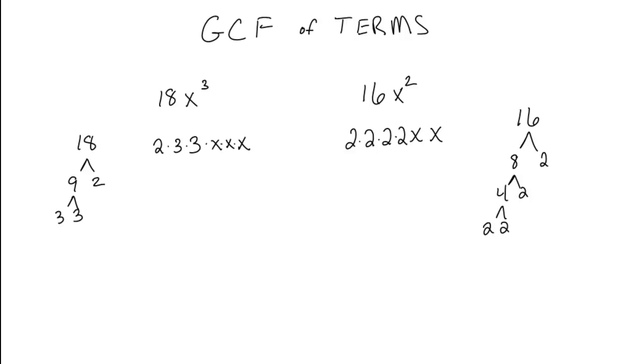Now, the greatest common factor in the terms are what values are in common. So I can easily look to see that the numbers that are in common is just a 2, and then how many x's are in common. There are two x's in common. So the GCF for this would be a 2 x times x or 2x squared. That is the GCF.